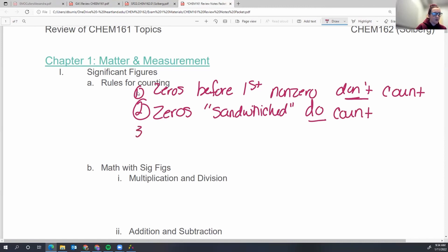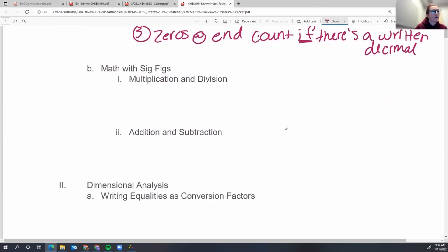And then the controversial zeros, the ones at the end, right? Do they count or don't they? And that's depending on if there's a decimal. So zeros at the end count if there's a written decimal somewhere. Now it doesn't matter if the decimal is before, it doesn't matter if the decimal is after, it just has to be written somewhere. Okay. All right. So those are our sig fig counting rules for the zeros.